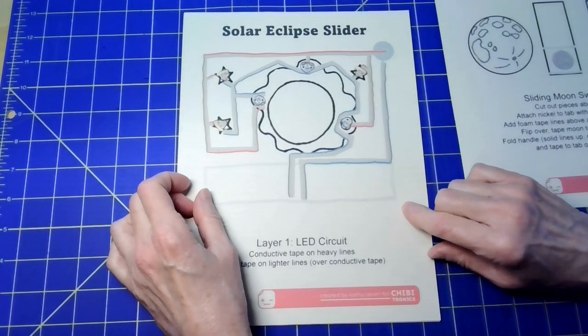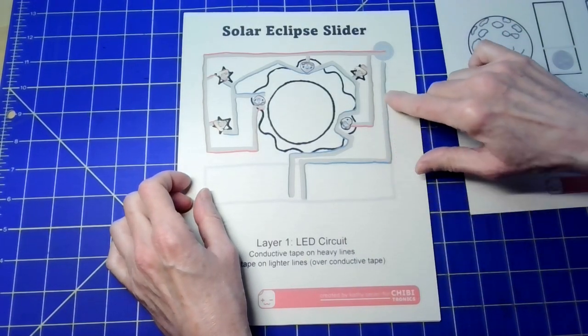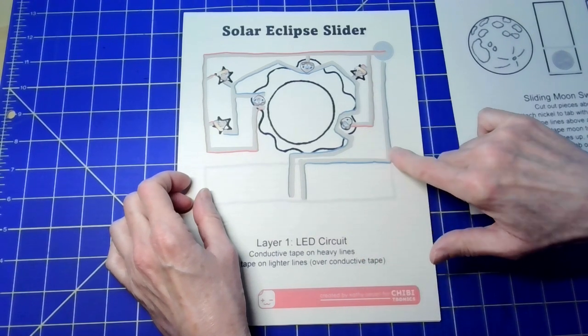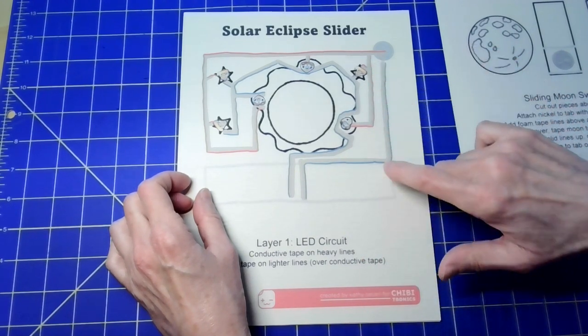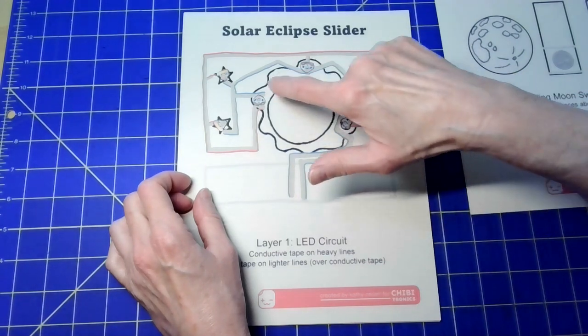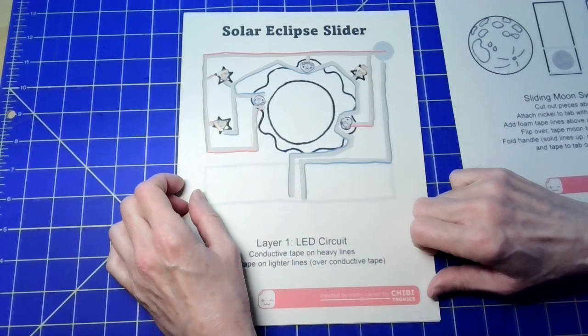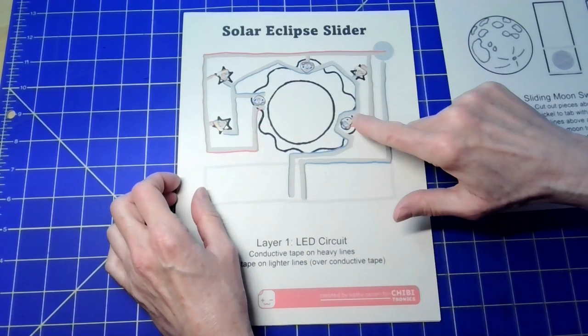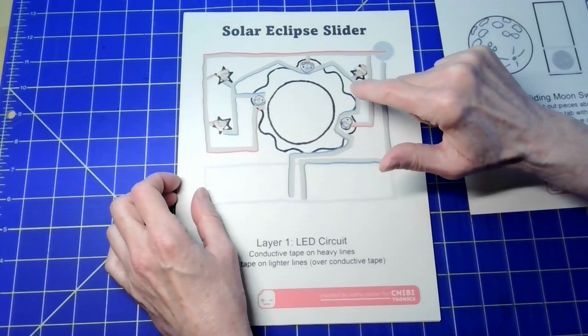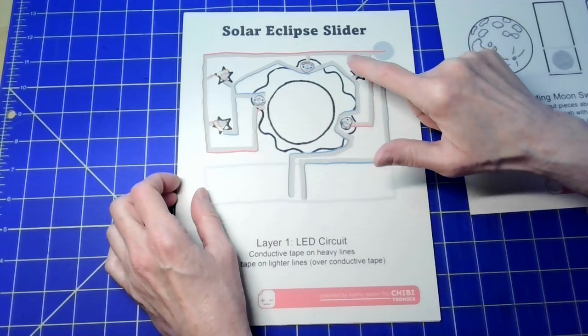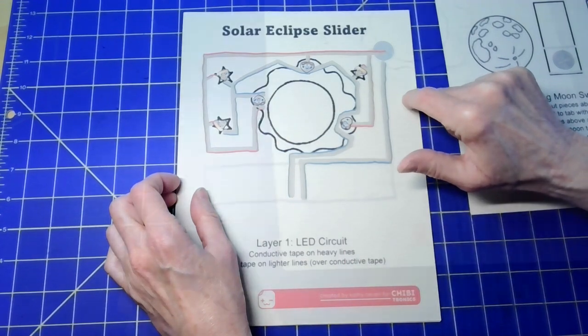Next we have the circuit itself. As always, the blue lines indicate the negative part of the circuit and the red lines indicate the positive. We've got one, two, three, four, five, six LEDs that will be attached. The ones that are on the corona are the animating fade LEDs and the rest are regular white LEDs.